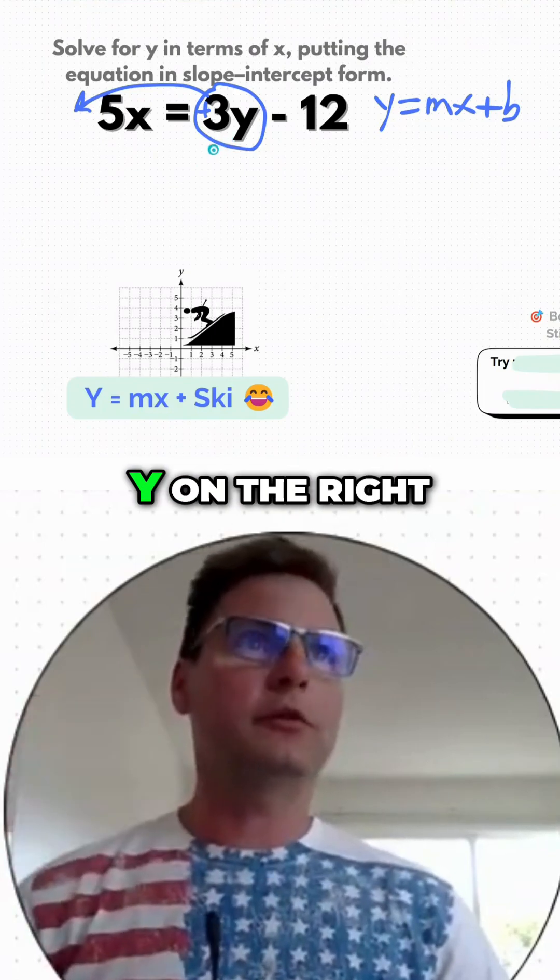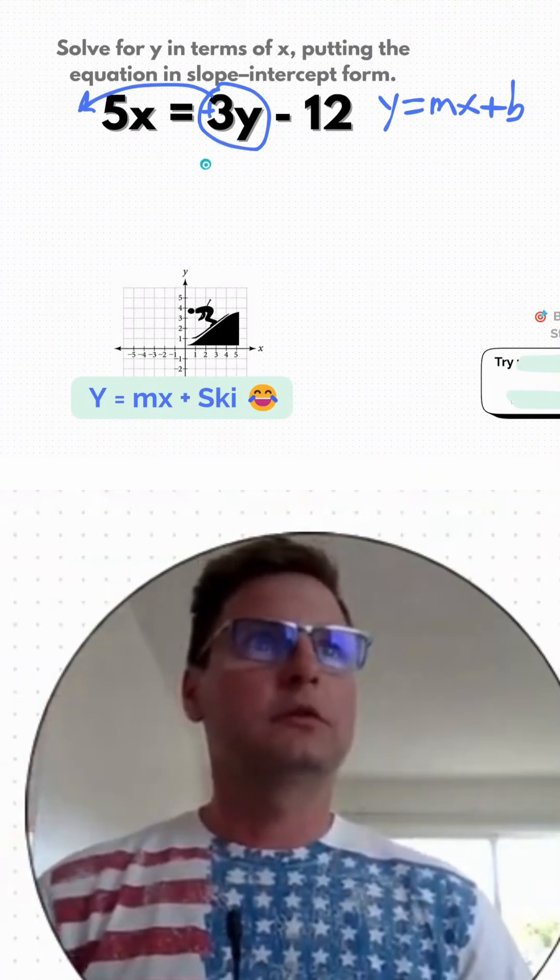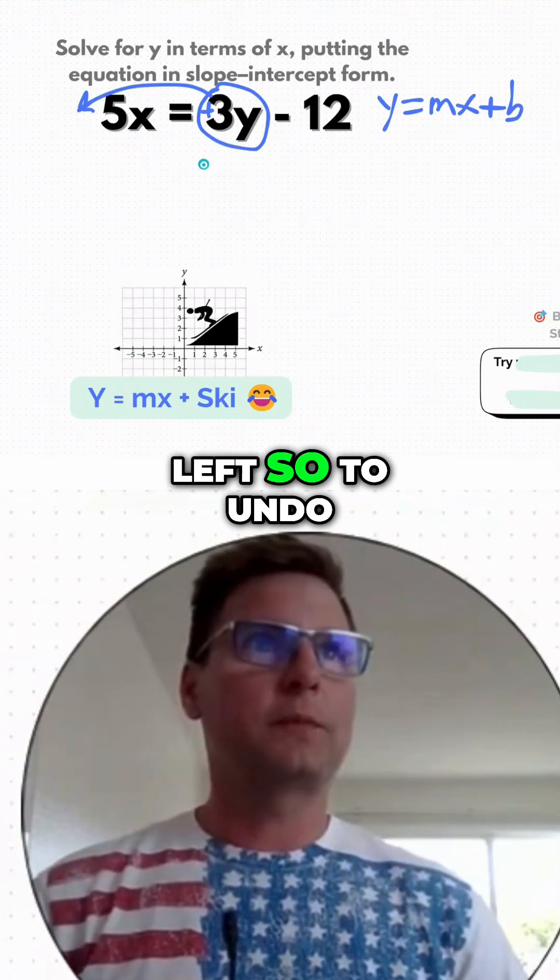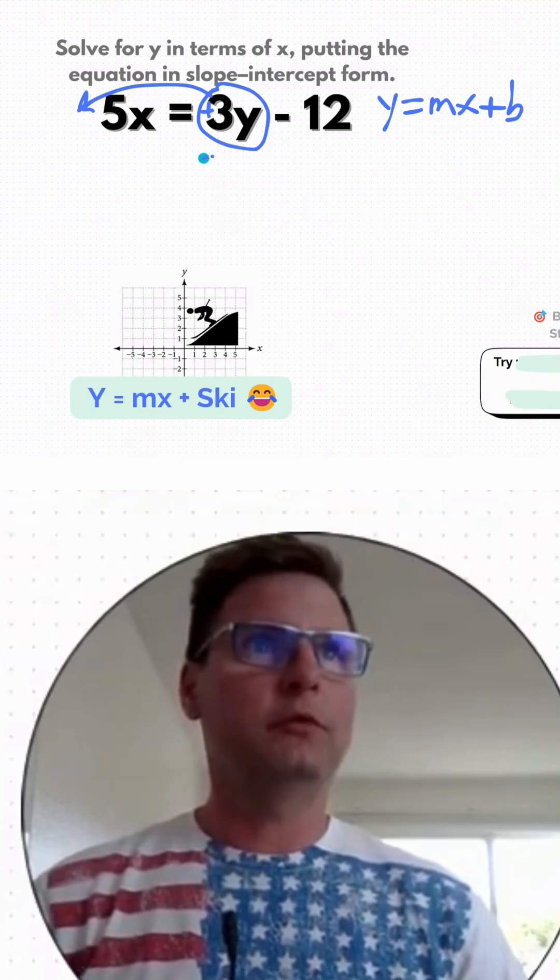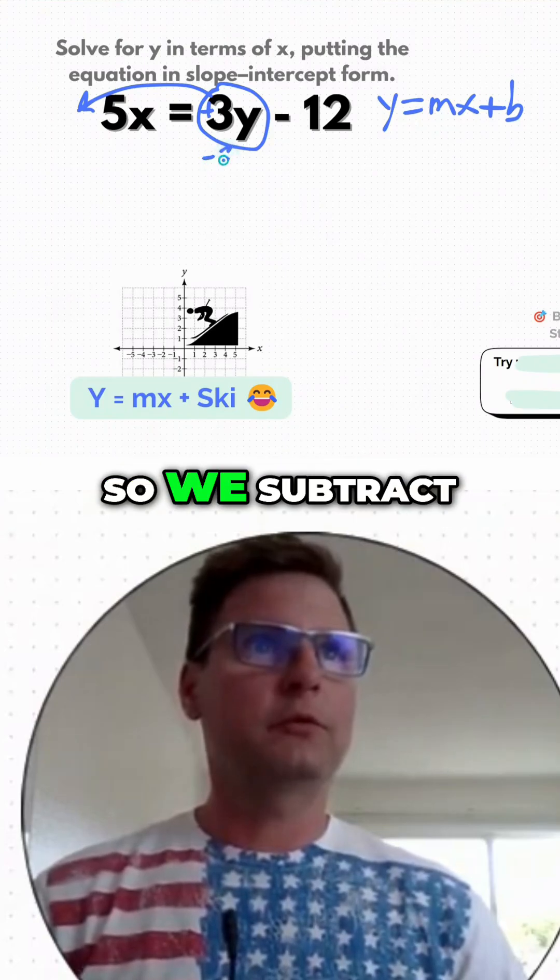So to undo something - in this case we want to get rid of that 3y on the right and move it to the left - to undo a positive, we do a negative, so we subtract.